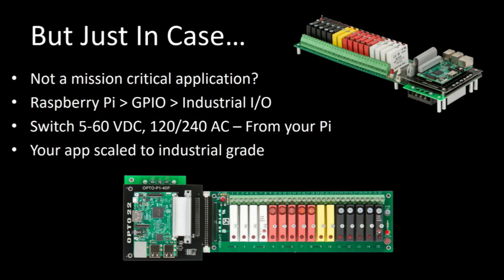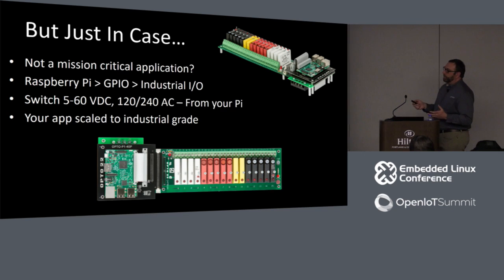Let's say you're a die-hard Raspberry Pi person or you want to quickly prototype something. This is a Raspberry Pi daughter card — you take the Raspberry Pi, drop it onto the daughter board, and through the GPIO pins on the Raspberry Pi you can control industrial-grade I/O modules and switch those high voltages and high currents, all from your Raspberry Pi. Kind of cool — something that's out there that we're testing.